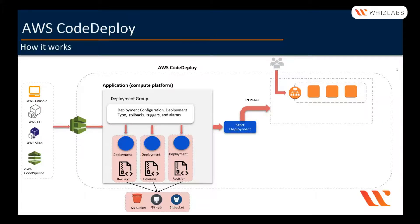With in-place deployments, there are a couple of drawbacks. First, regardless of the deployment configuration — all at once, half at a time, or one at a time — customer traffic to your application will be affected, as at least one instance will be down and the rest need to share the load. This might be unacceptable if your application has large traffic. Second, if there is an issue with the new revision after deployment is complete, you will have to scramble for a fix and redeploy the older version, if you are lucky enough to have the revision.